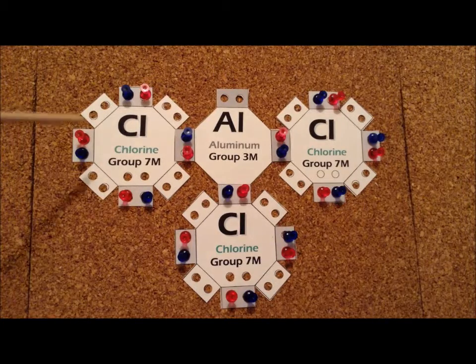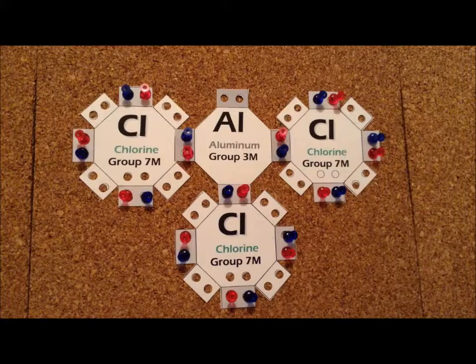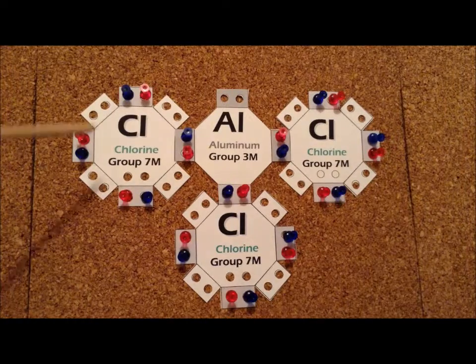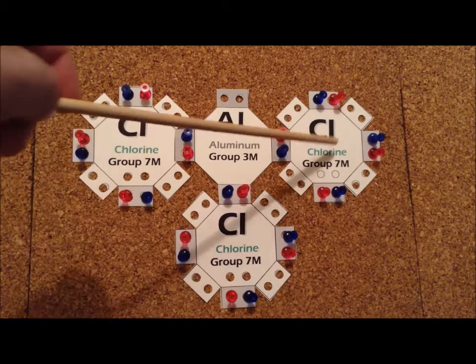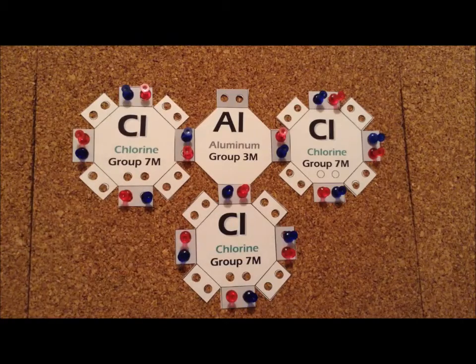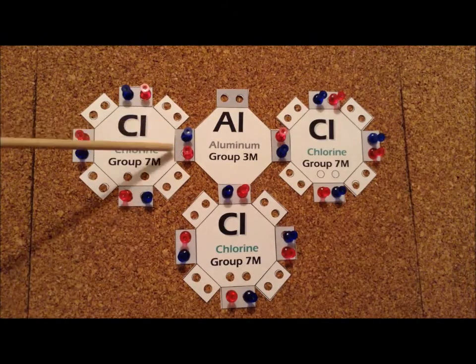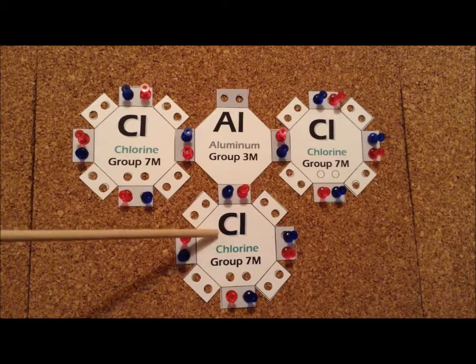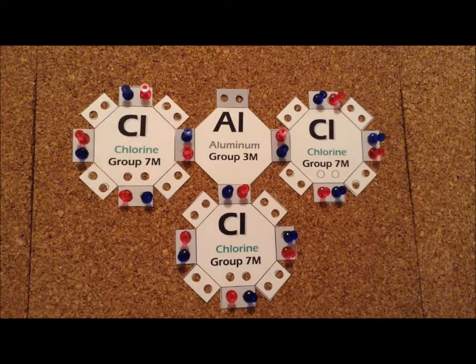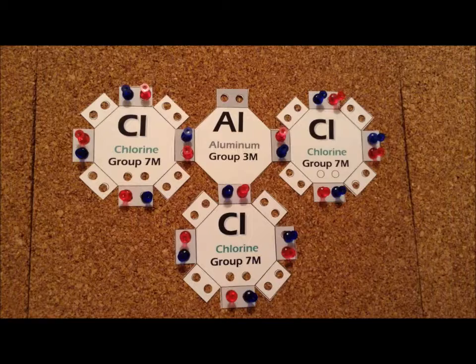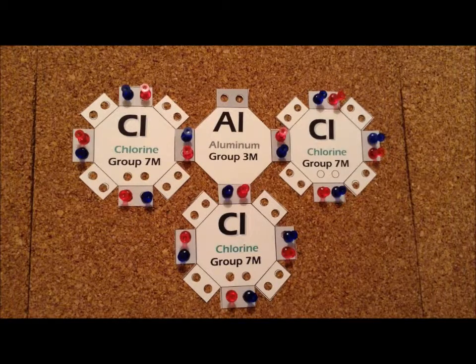Now we realize that chlorine, at minimum, needs to satisfy the octet rule, so around each chlorine atom, we immediately put eight electrons. That gives us our 24 electrons right away. We can use a pair of electrons from each of the chlorine atoms to bind to aluminum to hold the molecule together, and that gives us a single bond.